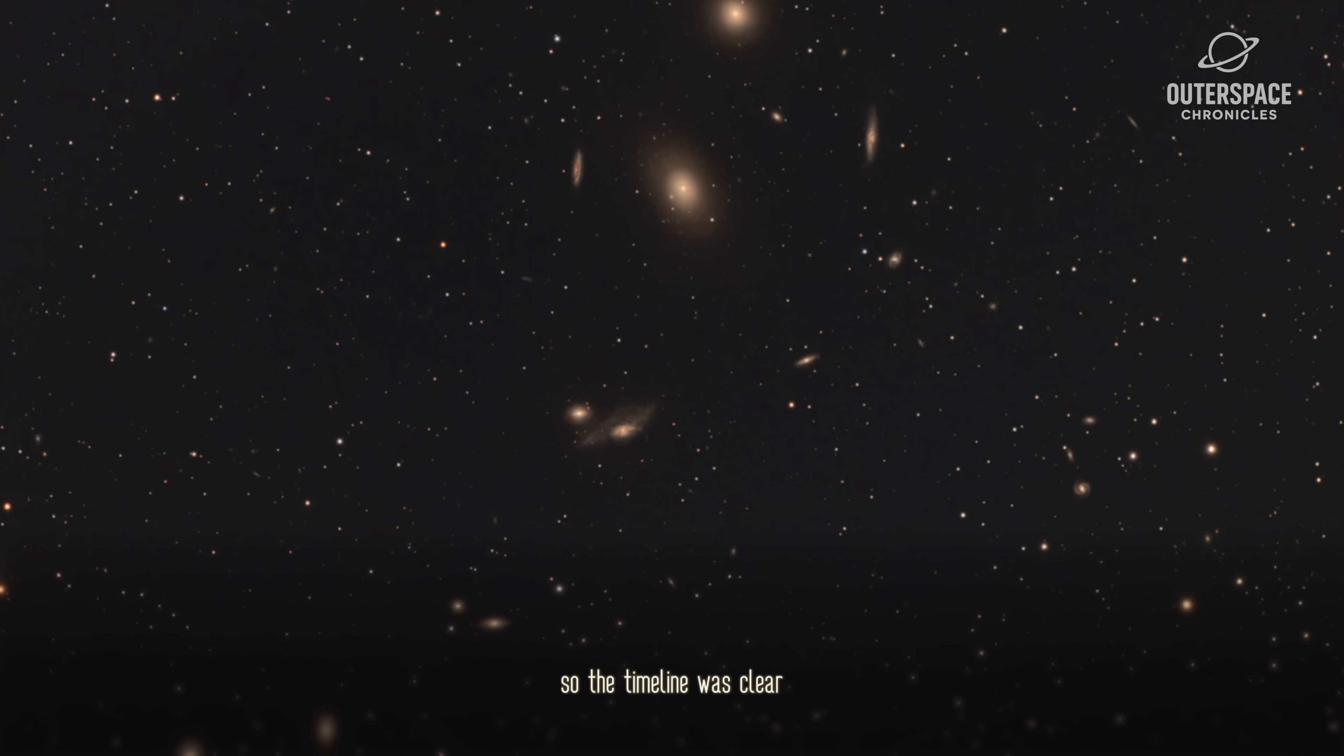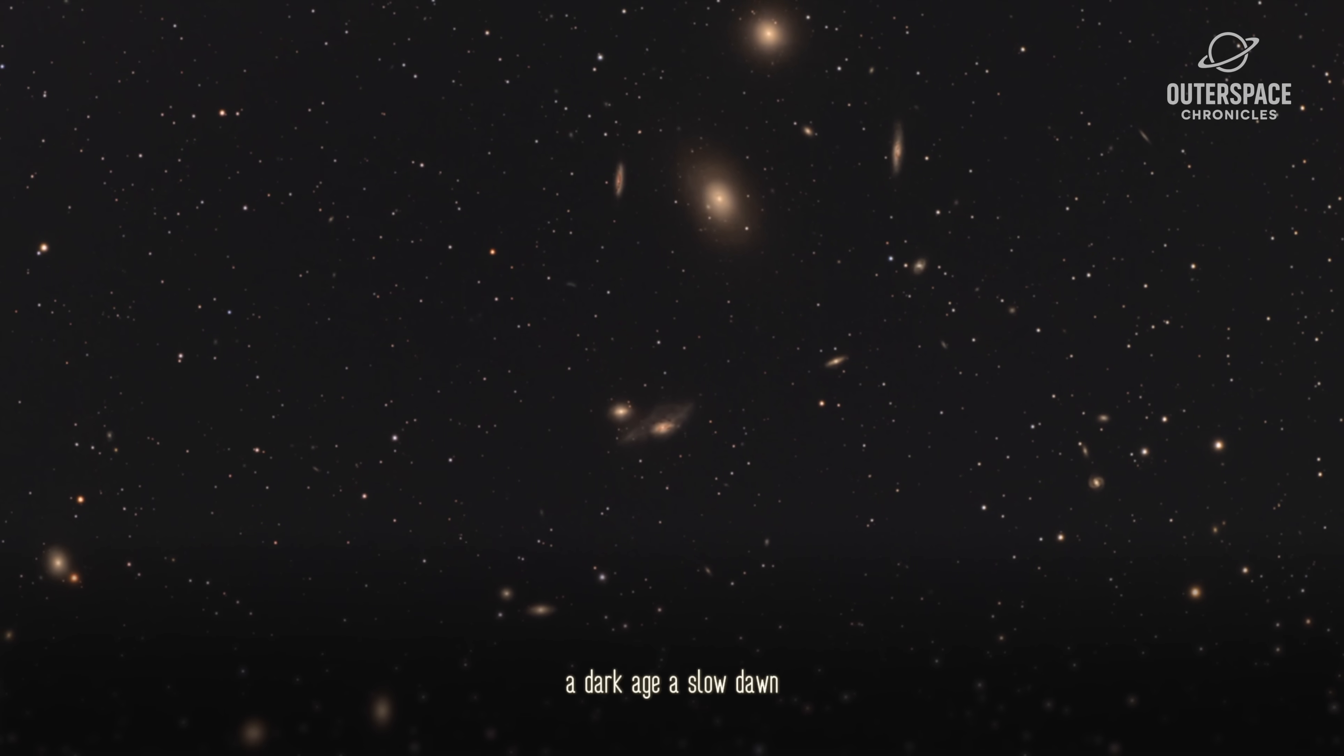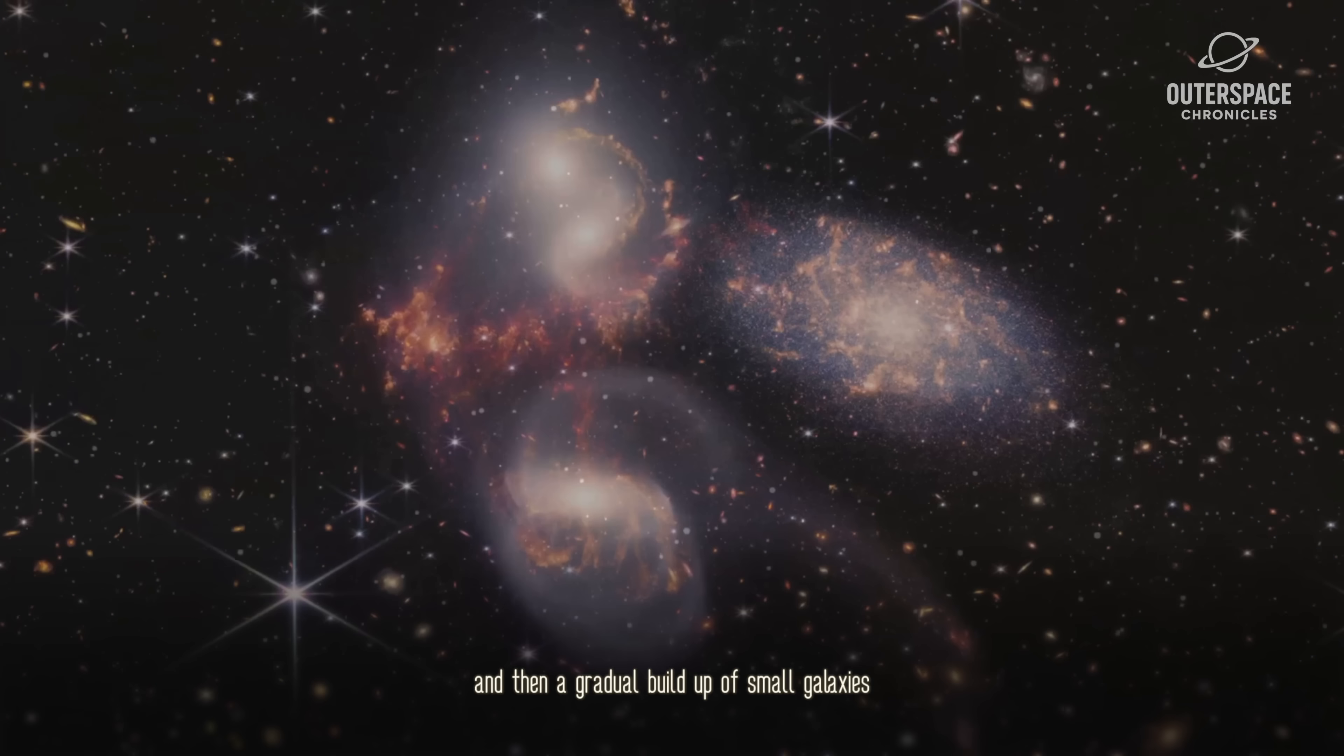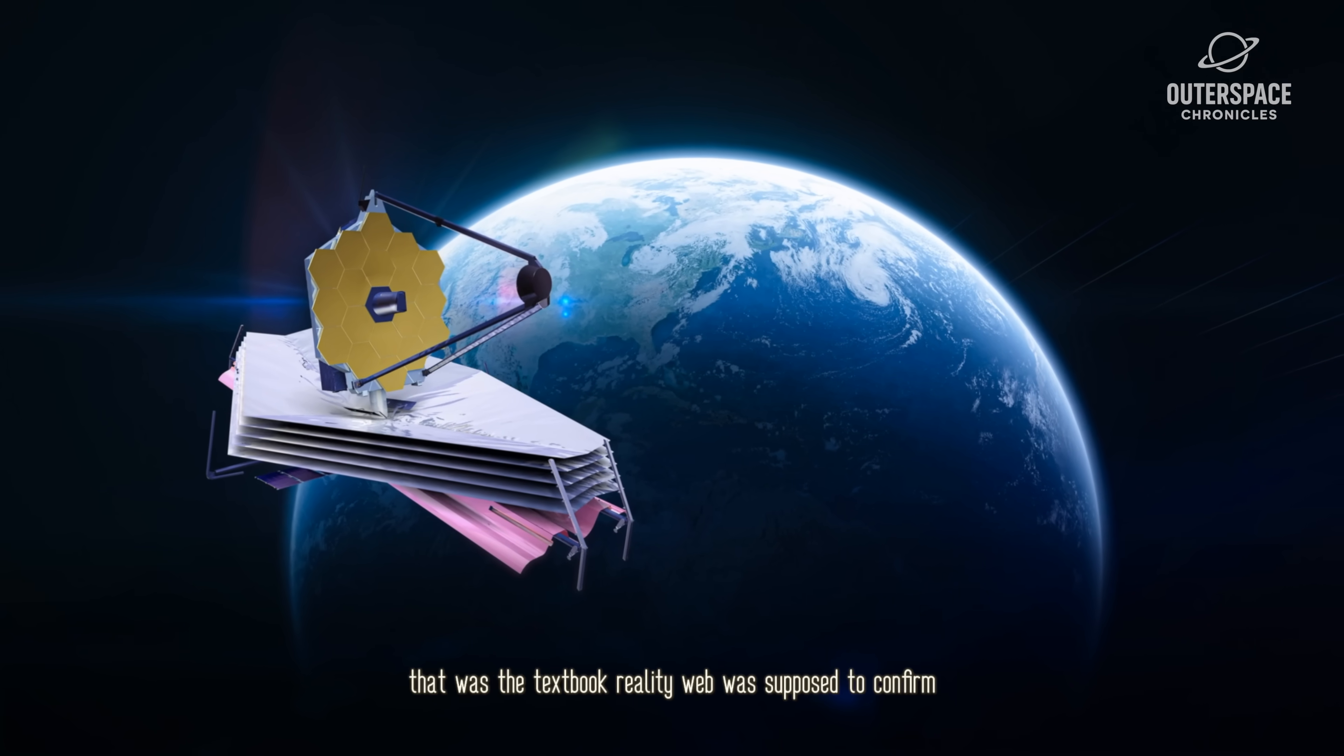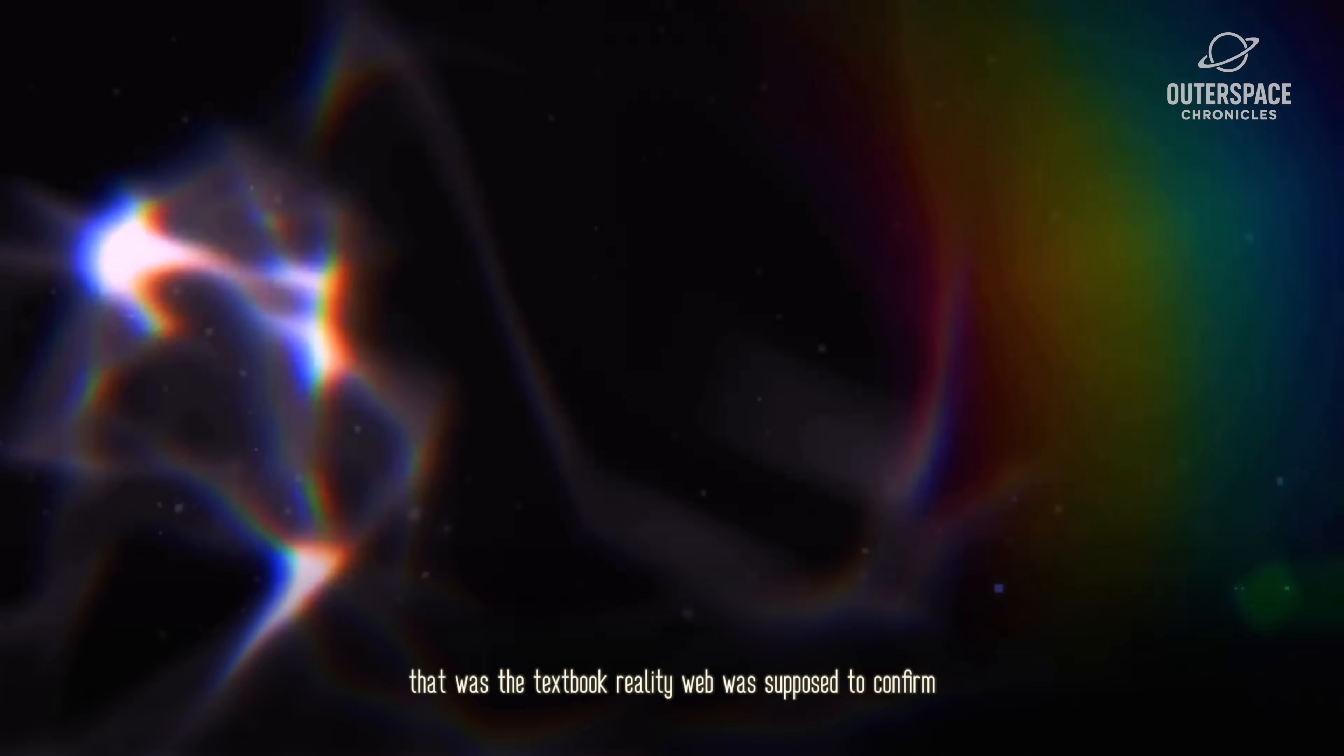So the timeline was clear. A dark age, a slow dawn, and then a gradual buildup of small galaxies over hundreds of millions of years. That was the textbook reality Webb was supposed to confirm.